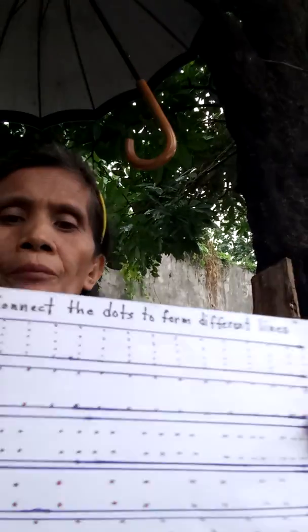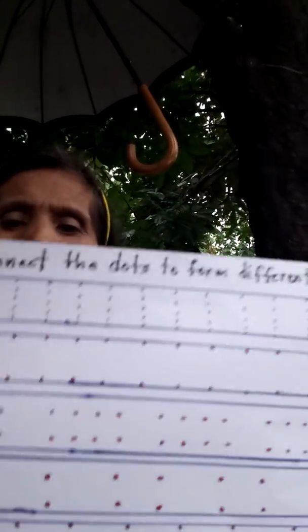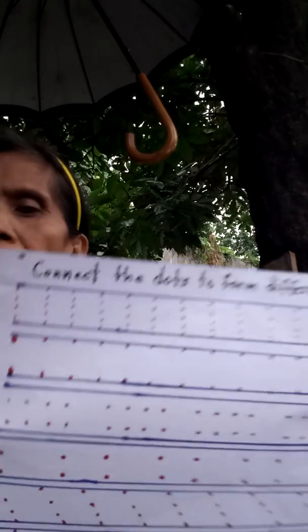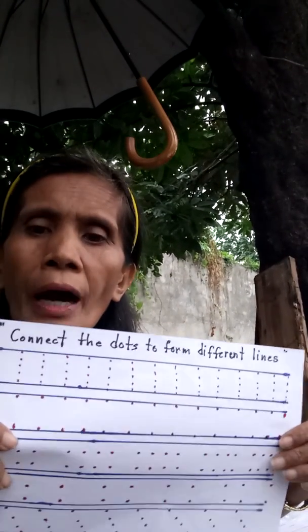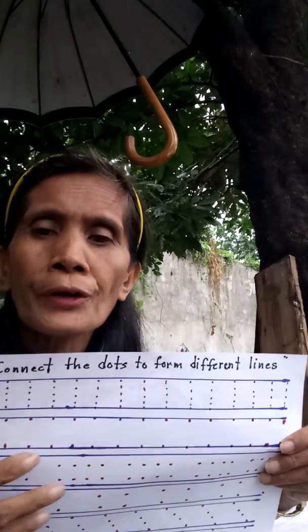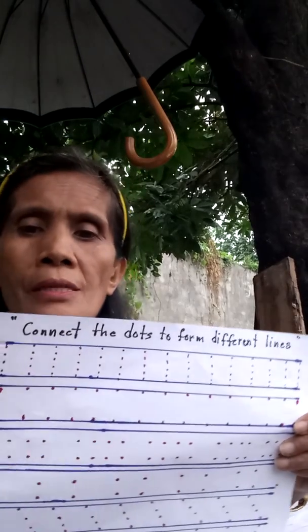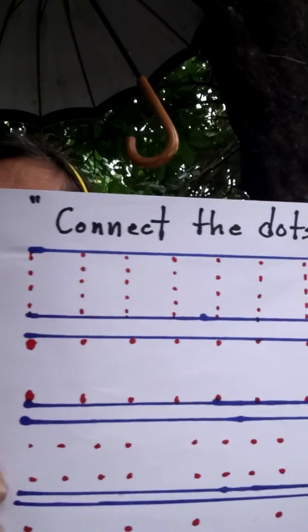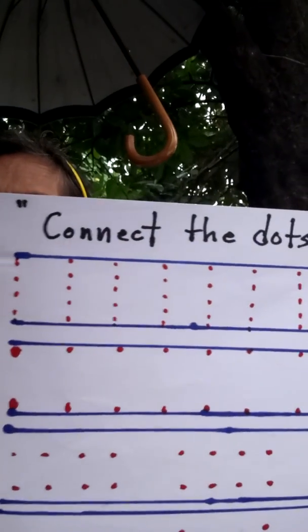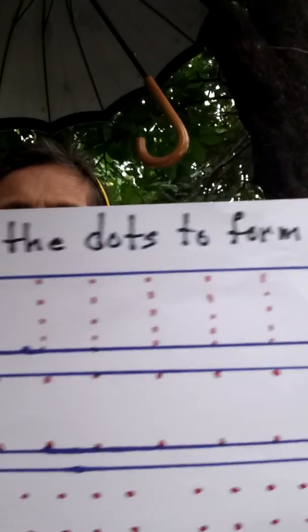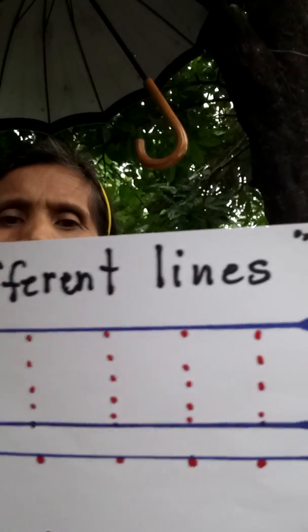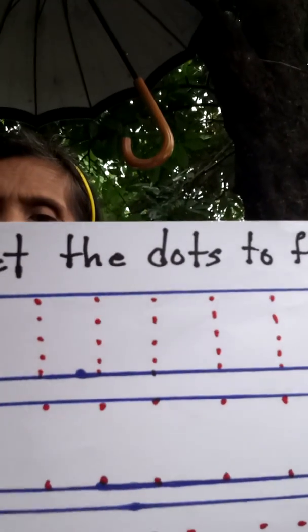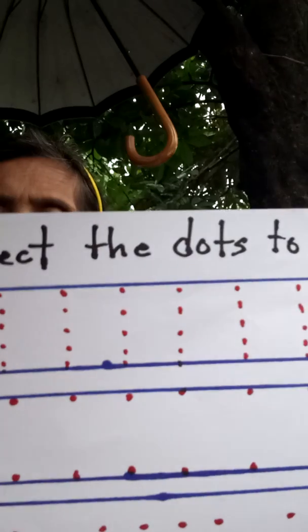...how to write the different lines. This is only for beginners. They have to draw or connect the dotted line for the straight line, or vertical lines. They have to follow from the top, always beginning from the top going down.